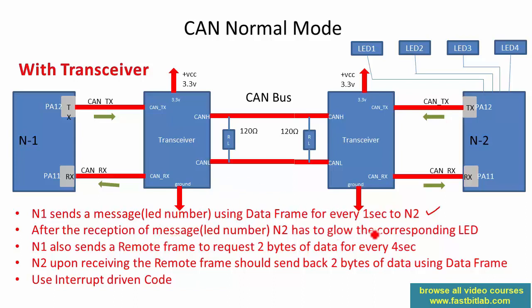After reception of the message, N2 has to glow the corresponding LED. I am using four external LEDs connected to different GPIO pins of the N2 board. So N1 sends the LED number, N2 receives it, and glows the corresponding LED.